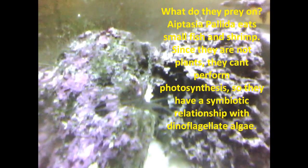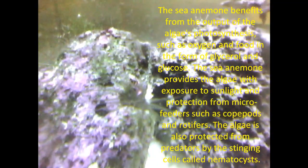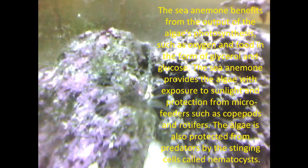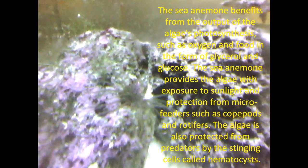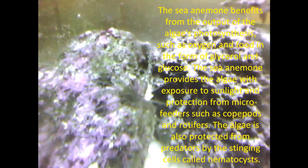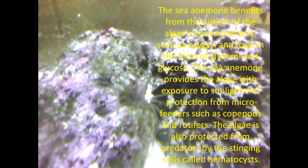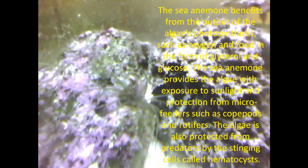The sea anemone benefits from the output of the algae's photosynthesis, such as oxygen and food in the form of glycerol and glucose. The sea anemone provides the algae with exposure to sunlight and protection from microorganisms such as copepods and rotifers. The algae is also protected from predators by the stinging cells called nematocysts.